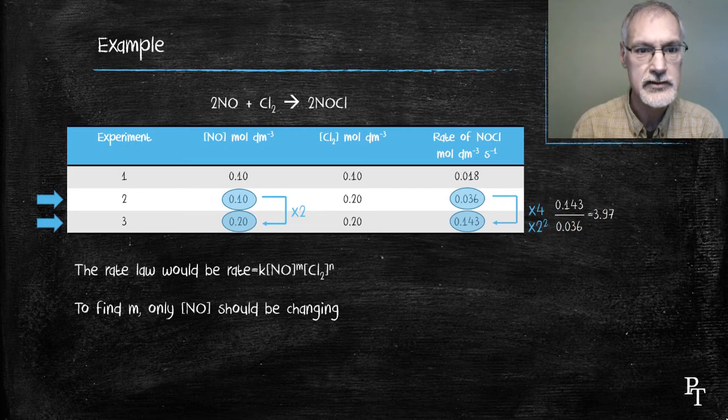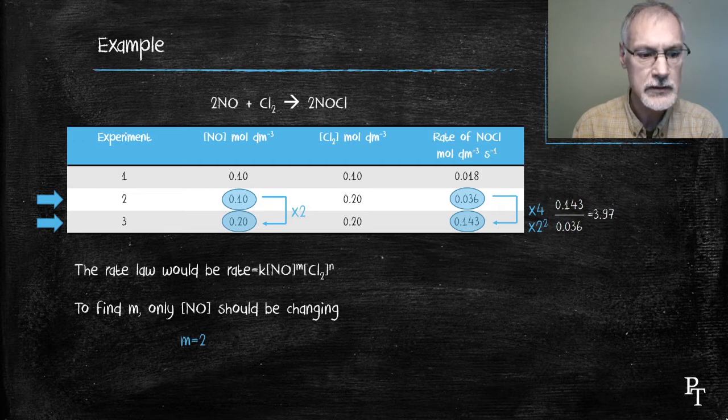That would therefore correspond to 2 squared. That means that the exponent for nitrogen oxide must be 2. It's a squared relationship.